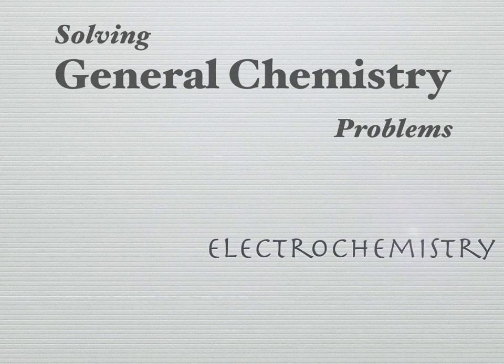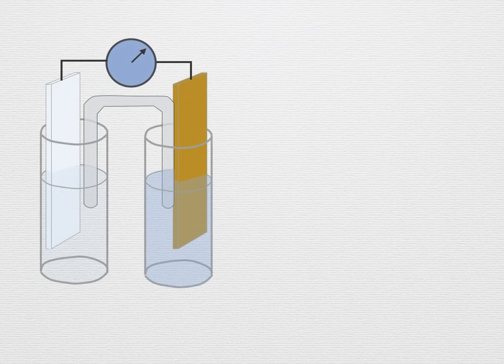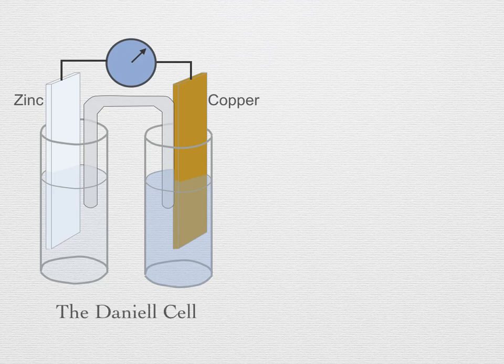Solving General Chemistry Problems: Electrochemistry. We have seen how by changing the concentration of participants in a reaction, we can alter the potential of the cell.